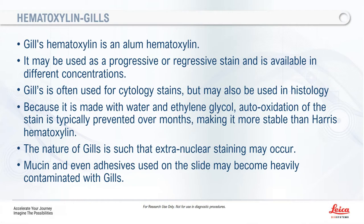Gill's hematoxylin is another of the big three — an alum hematoxylin used progressively or regressively, available in concentrations 1, 2, and 3. It's typically used for cytology but sometimes in histology as well. Made with water and ethylene glycol, it prevents oxidation of the stain over months, making it more stable than Harris. However, there can be some extra-nuclear staining, so your differentiator is really important for getting rid of that, as mucin and adhesives on the slide can stain blue in the background.